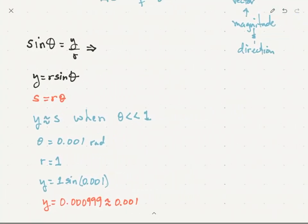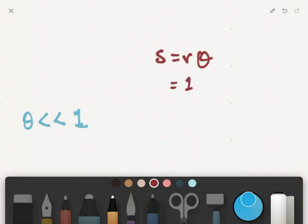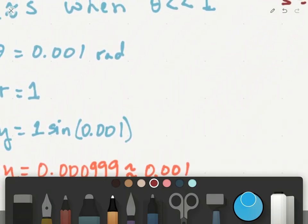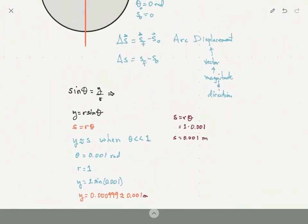And let's go ahead and do the same thing for S, or the arc length. S is equal to R times theta, and in this particular case, we just have 1 times 0.001, which is just 0.001. And it should be in meters, we're going to use meters all throughout, so I'm just going to say meters here, because we're dealing with lengths.